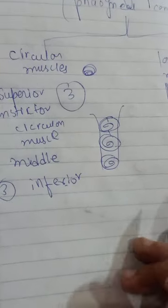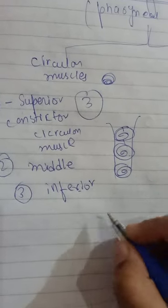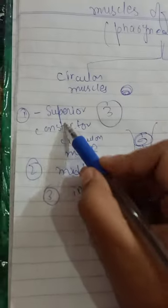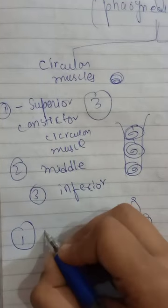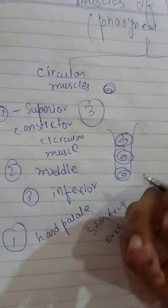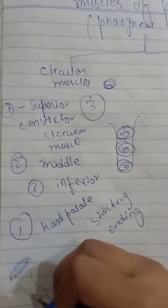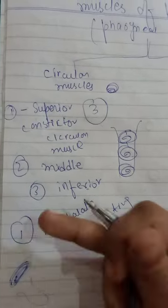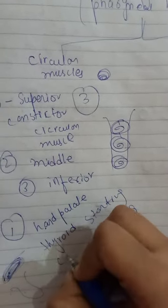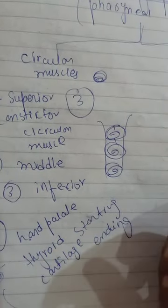Let's talk about the location of these muscles. They all have two origin points: a starting origin and an ending origin. The superior constrictor basically starts from the hard palate — in the upper side of the mouth we have the palate, that is the hard palate, and beside that is the soft palate. It starts from the hard palate and ends with the thyroid cartilage.